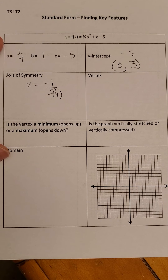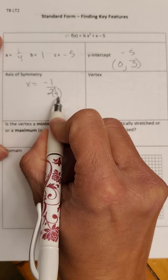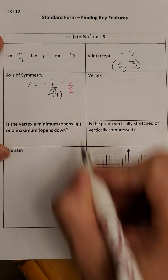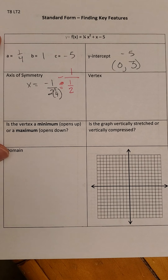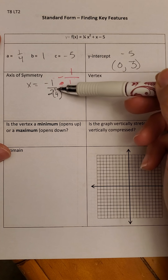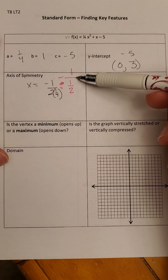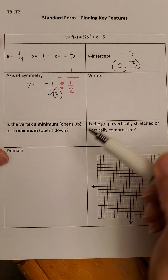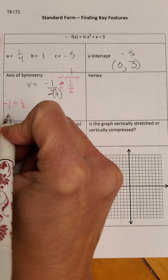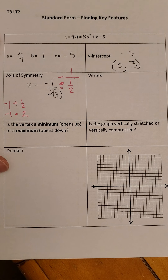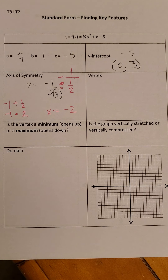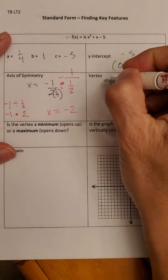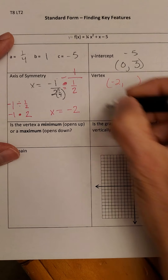We've got some fractions here. 2 times 1/4 is 1/2, so we have negative 1 divided by 1/2. Remember, a fraction bar is always a division bar — when you divide fractions, you multiply by the reciprocal. So negative 1 divided by 1/2 becomes negative 1 times 2, which is negative 2. So our axis of symmetry is X equals negative 2, and that gives me the X-coordinate of my vertex.